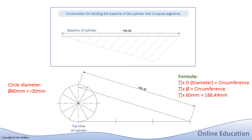In the end, we will make use of the construction of how to divide a line into 12 equal segments, because we want to do the development of the surface area of our cylinder, and that will be the last part of our tutorial.